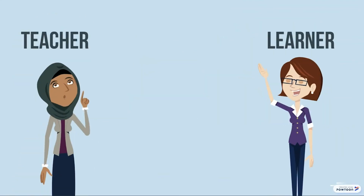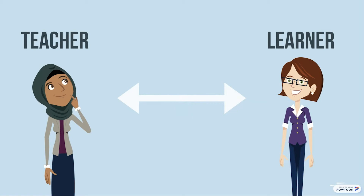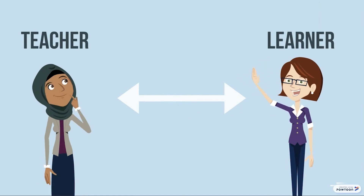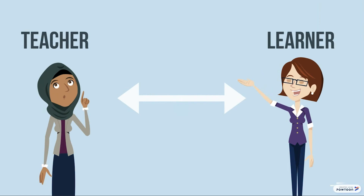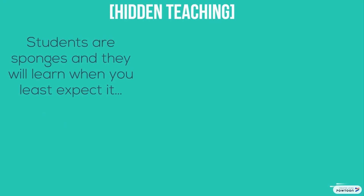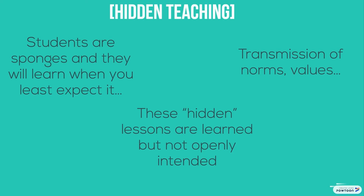We have explored the idea that what we hope to teach does not always equate with what our candidates learn. But we should perhaps spare a thought for the potential learning of lessons that we have not intended — what might be described as hidden teaching. Your candidates are like sponges soaking up experiences, and they will learn when you least expect it. This may be in the form of the transmission of norms and values; behaviors may be observed and emulated, whether those behaviors are intended or not.